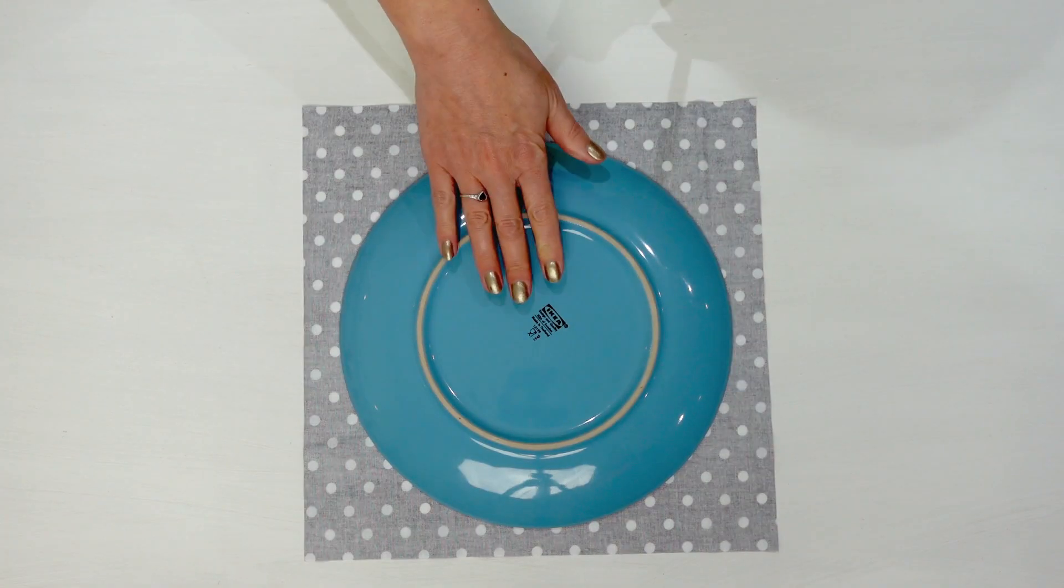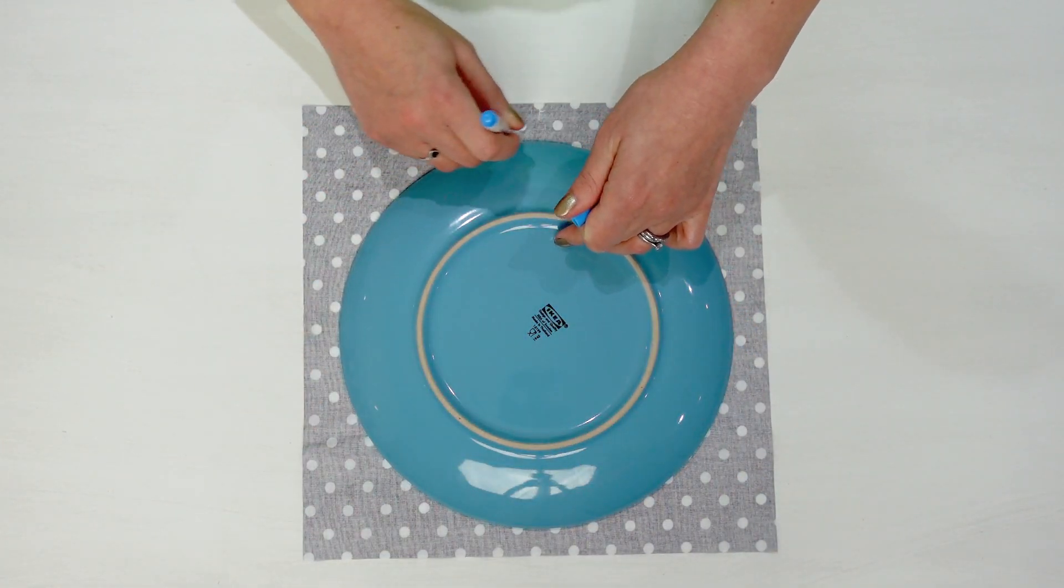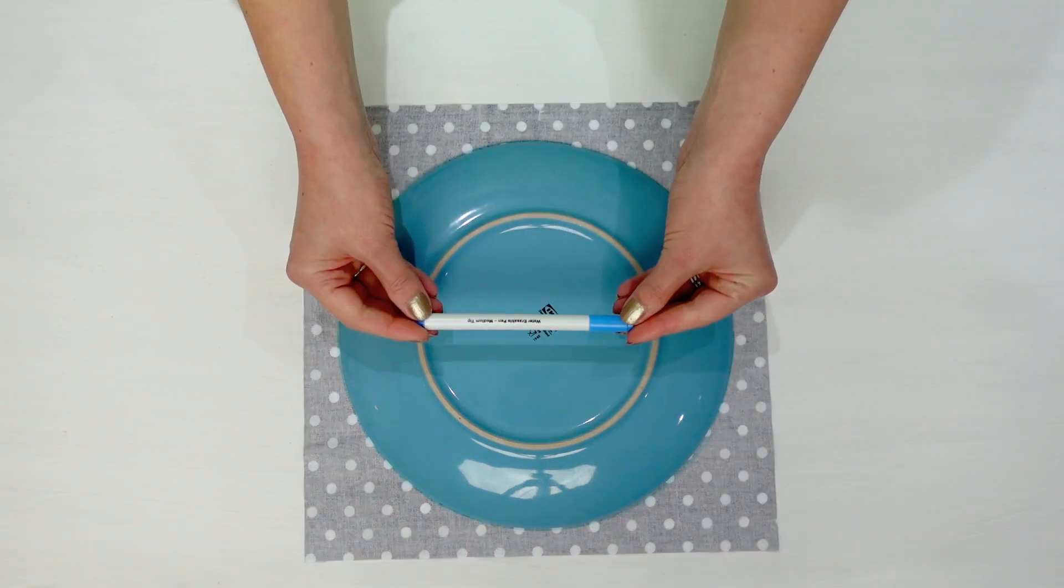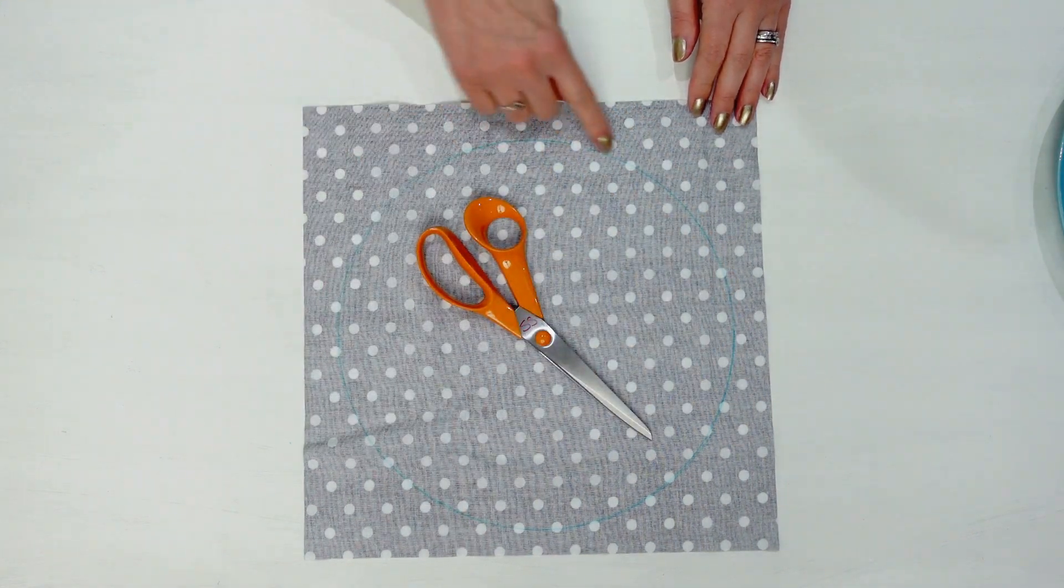To cut your mask start by drawing around your dinner plate. We're using a fabric marker but you could use any pen or pencil. Next you need to cut out your circle.